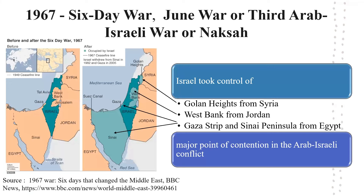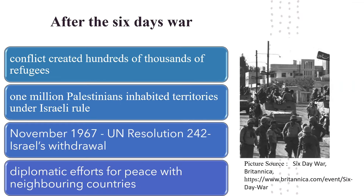During the Six-Day War, Israel took control of the Golan Heights from Syria, the West Bank from Jordan, and the Gaza Strip and Sinai Peninsula from Egypt. The area on the map in light green colour represents territories occupied by Israel during the Six-Day War. These areas were considered occupied by Israel and the status of these territories subsequently became a major point of contention in the Arab-Israeli conflict. The conflict created hundreds of thousands of refugees. More than one million Palestinians inhabited the occupied territories under Israeli rule. In November 1967, the United Nations passed UN Resolution 242, which aimed at Israel's withdrawal from the territories it had captured in the war in exchange for lasting peace. This resolution became the basis for diplomatic efforts for peace with neighbouring countries.